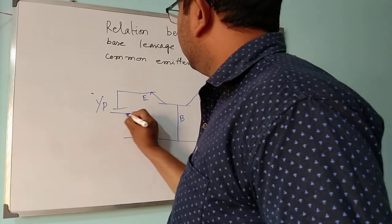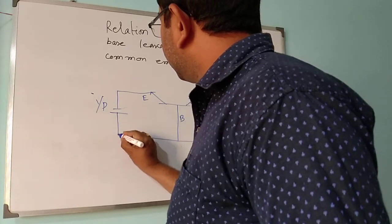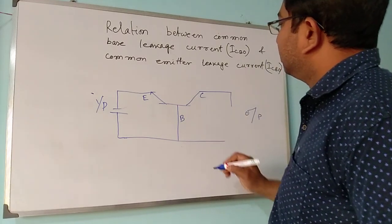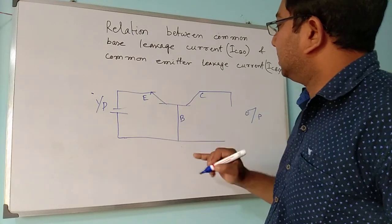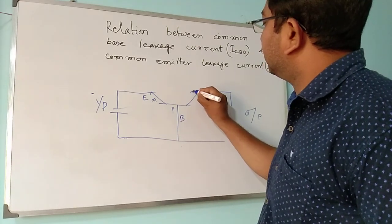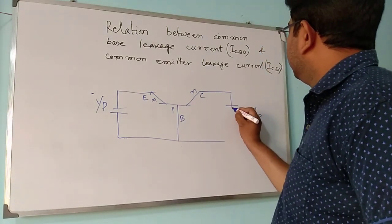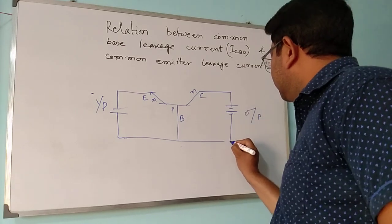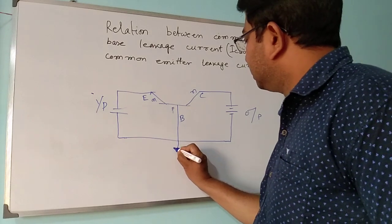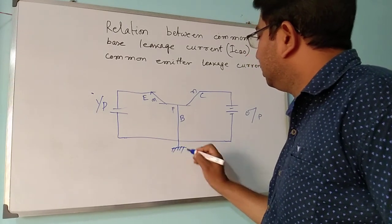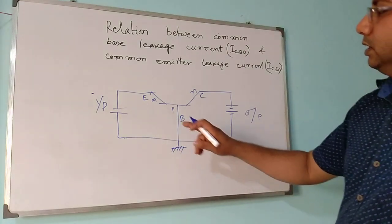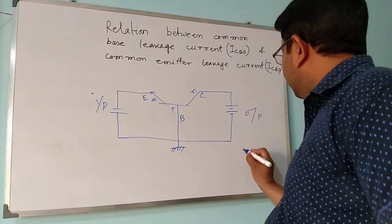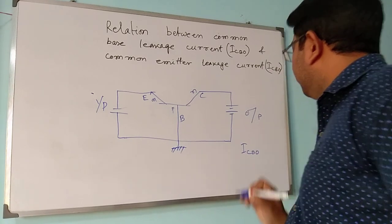Base-collector is in reverse bias, so this is your NPN transistor. The collector terminal is connected to positive and the base terminal is connected to negative. The base terminal is common to the input and the output, so this is your common base configuration. The leakage current is given as ICBO — common base leakage current.